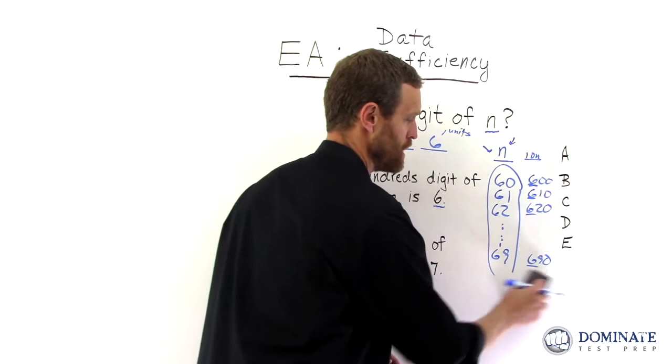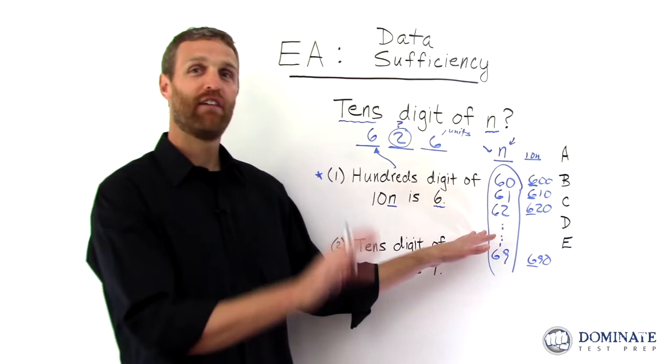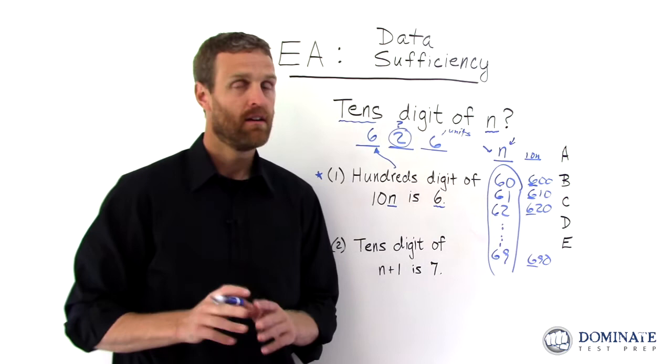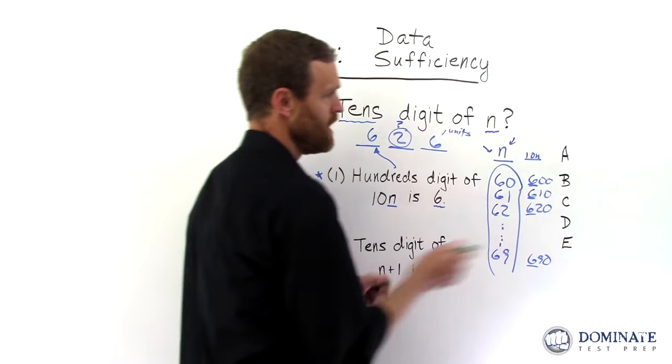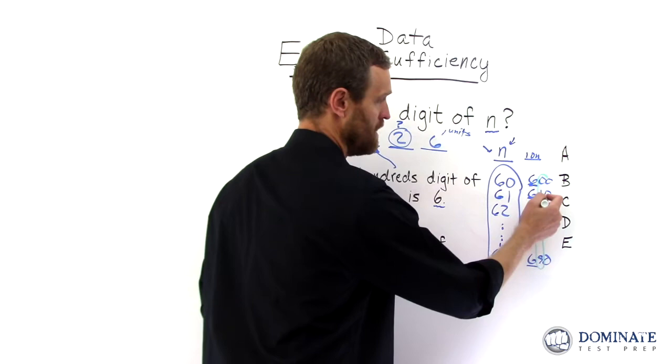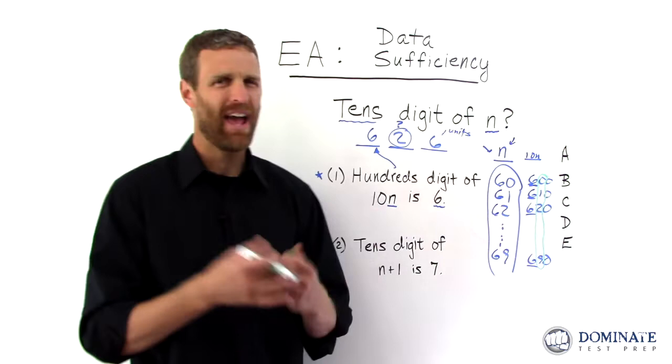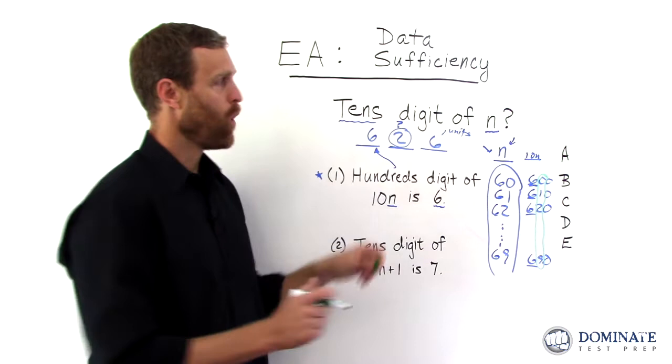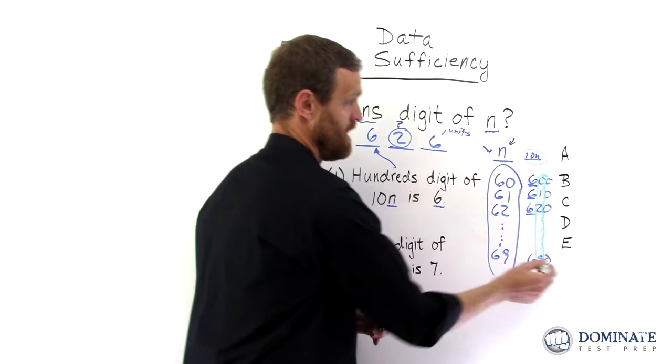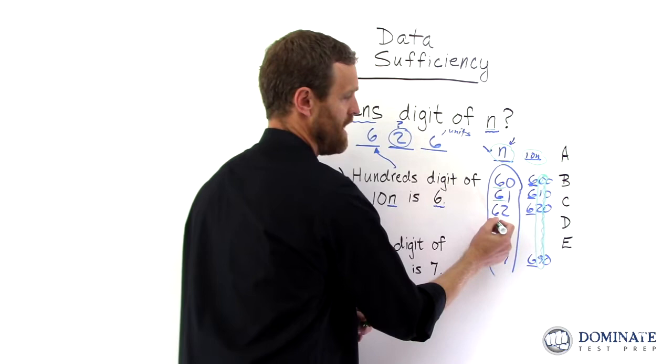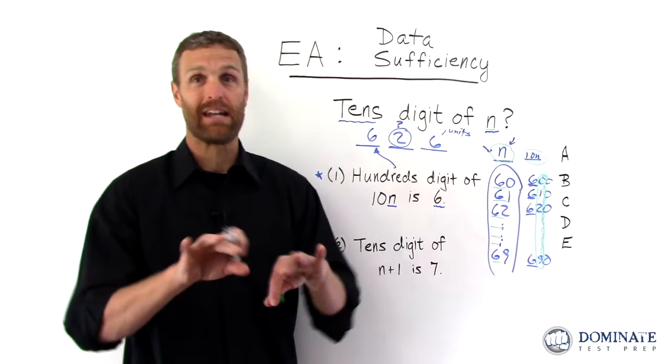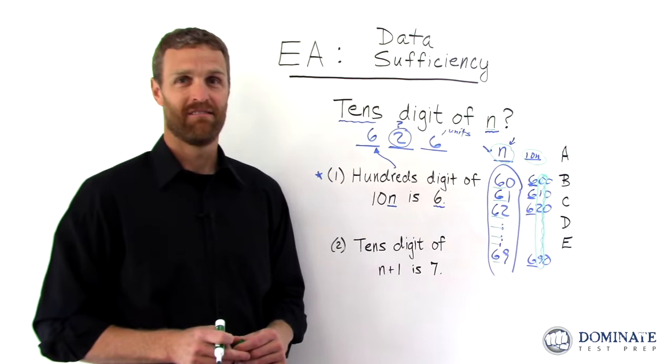Now here's where it gets tricky. Given that world of possible n's, can I definitively answer the question? Be careful. Some students would look at this and say, well, Brett, no, the tens digit is different every time, right? 1, 2, 9. So I don't definitively know n. It's not sufficient. Not so fast. The question isn't asking what is the tens digit of 10n? It's asking what is the tens digit of n itself? And in every possible case, every possible potential n in the world of allowable n's according to statement number 1, it is 6, definitively.